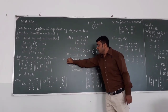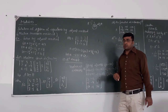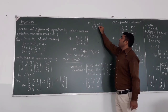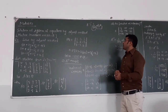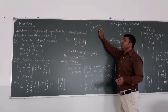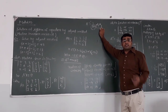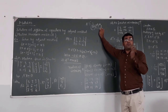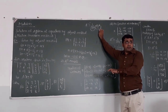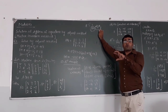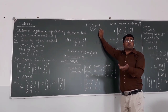Now we calculate the adjoint of A. The adjoint of A is defined as the transpose of the matrix of cofactors. So first we find the cofactor matrix, and then we take its transpose to get the adjoint.